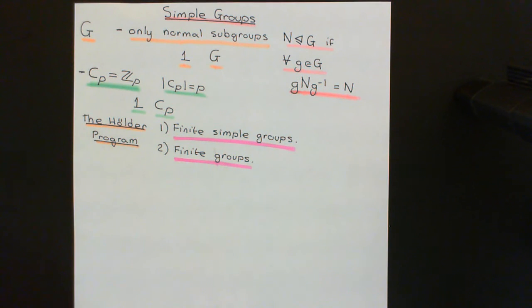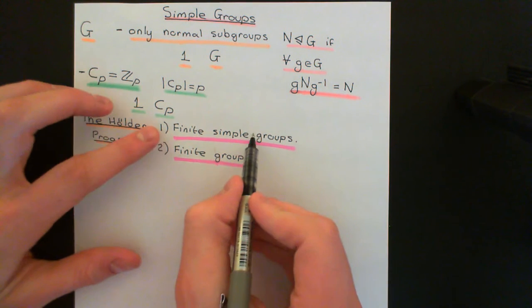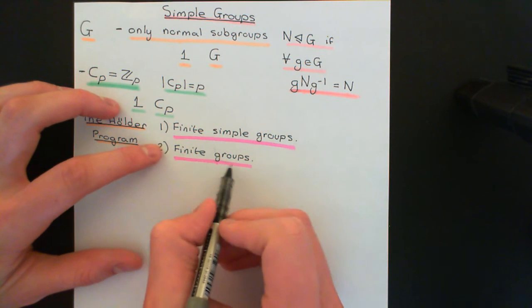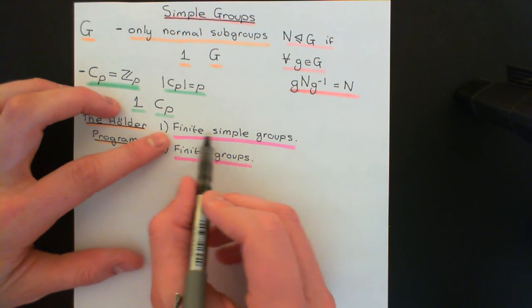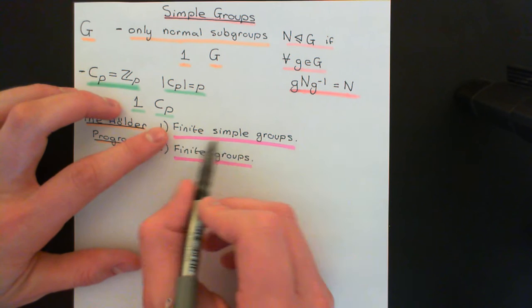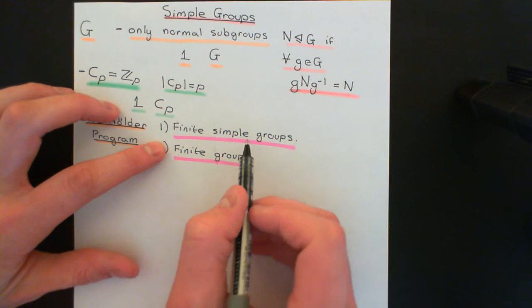I will make that precise in future videos — the future video entitled Composition Series in the playlist on group theory. The hope was that if we could classify all finite simple groups, we'd be able to classify all finite groups, because all we have to work out is how many different ways there are to put together the building blocks to make other groups.